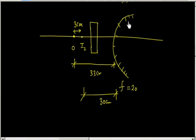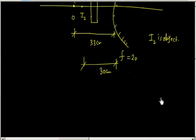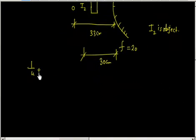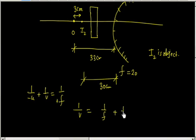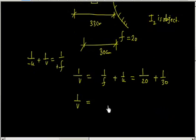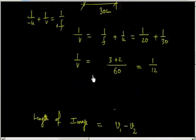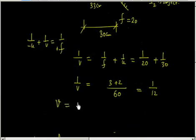For the mirror, I2 is the object. Applying 1/U plus 1/V equals 1/F: U is on the negative side so it is negative, F is positive (convex mirror). So 1/V equals 1/F plus 1/U equals 1/20 minus 1/30. That gives 3/60 minus 2/60 equals... wait, solving: 1/V equals 1/20 plus 1/(−30), giving 3/60 minus 2/60 equals 1/12. So V equals 12 centimeters, positive, meaning the image I3 is formed 12 centimeters behind the mirror.